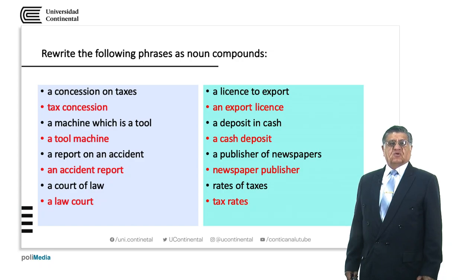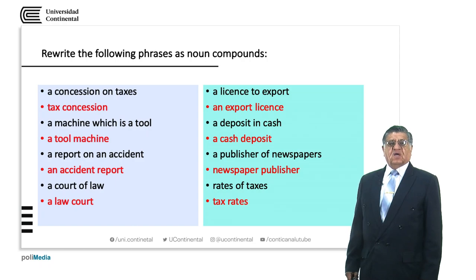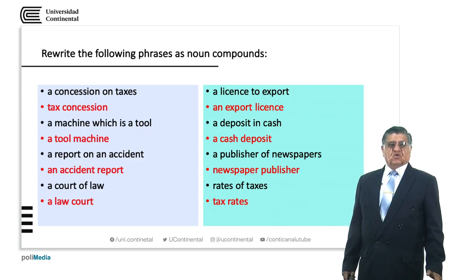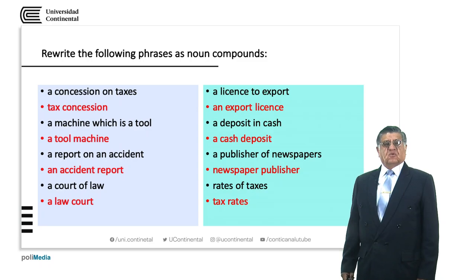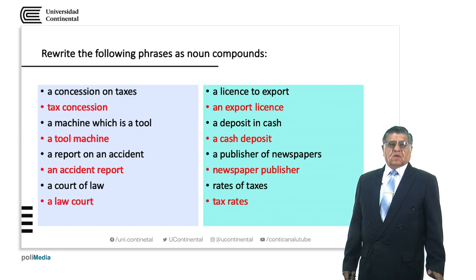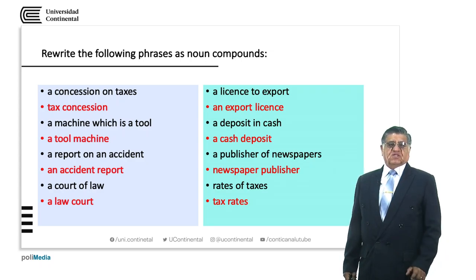In the second example, it is the same. We are talking about a machine that works as a tool, so the head word is 'machine' and 'tool' is the modifier. 'Tool machine'. In the next example, 'a report of an accident' — what are we talking about? About the accident or about the report? We are talking about the report, not about the accident. The report was written about an accident. So that's 'an accident report'.